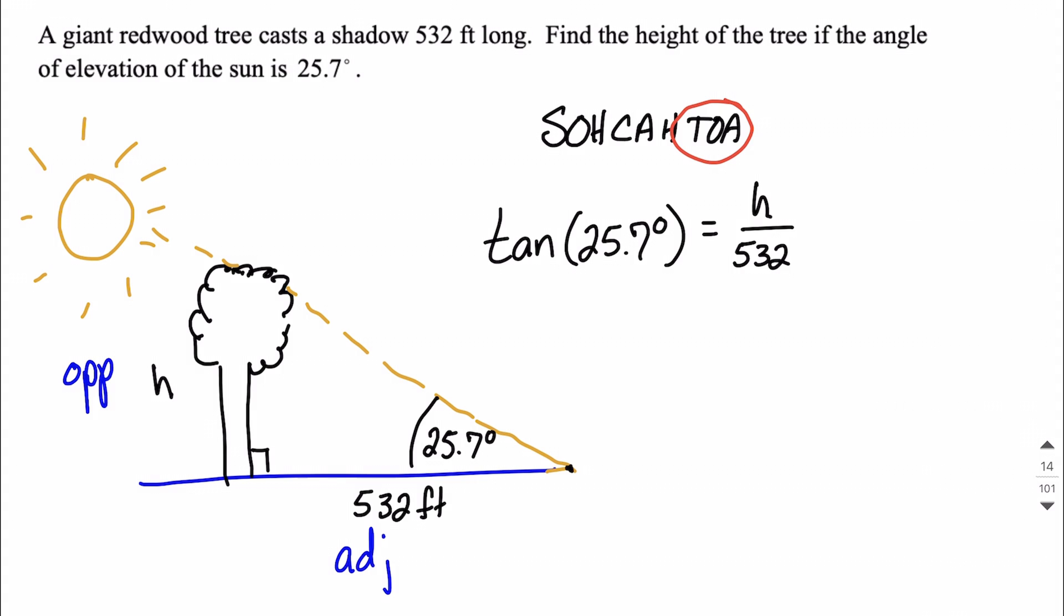From here, we still need to solve this equation we just set up for h, but that shouldn't be too bad. We just need to multiply to get the 532 to the other side. In multiplying, we multiplied and we're dividing by the same thing, so that'll isolate the h on one side by itself.